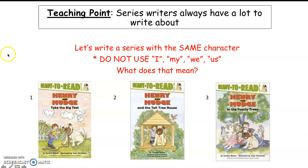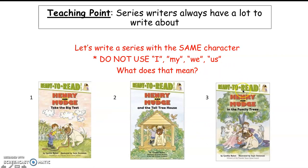For example, in Henry and Mudge, we use the same characters across one, two, three different books. Henry and Mudge is a series — they have the same characters in each book, but each book they go on a different adventure.